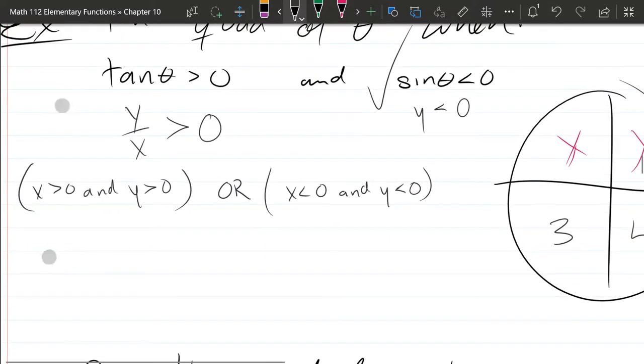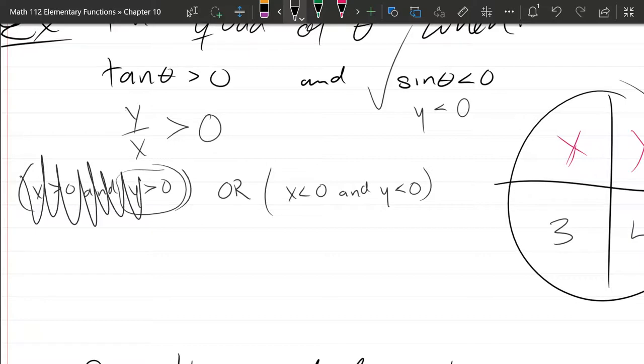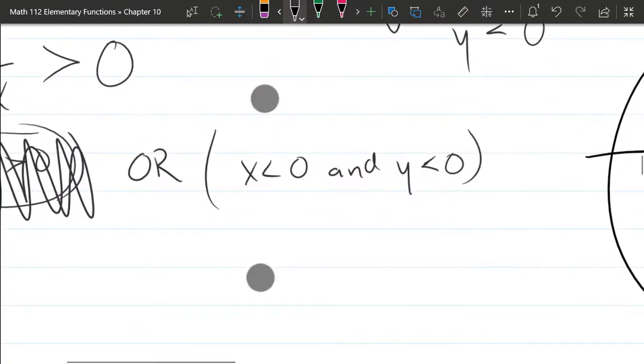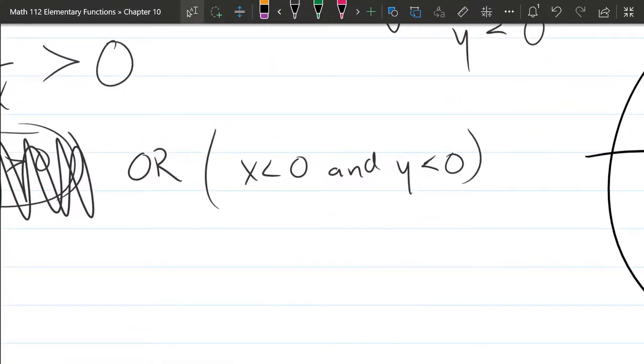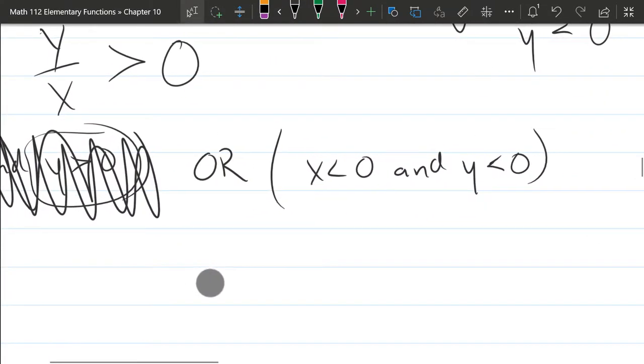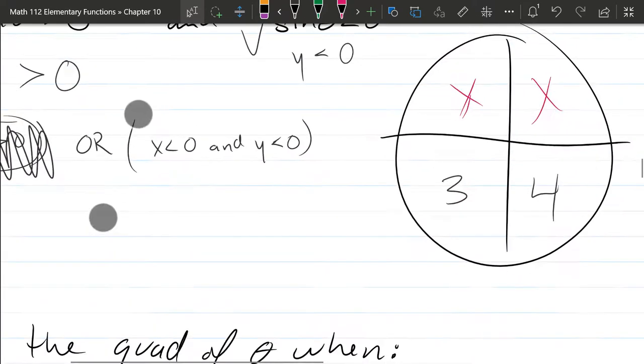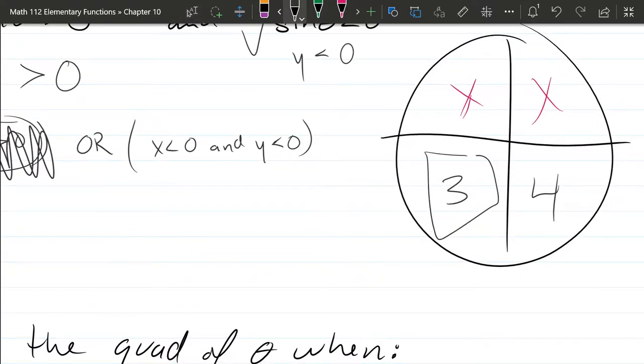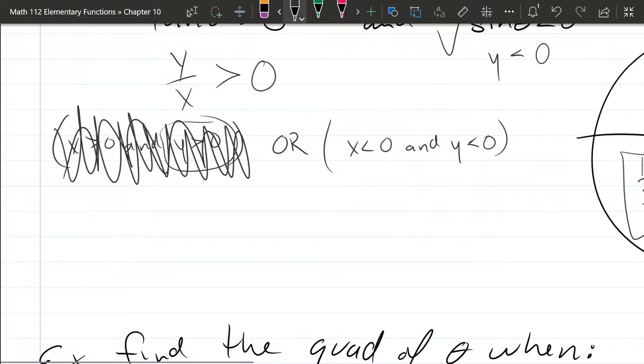So which of these is happening? Well, we already know y is negative. So that means this y greater than zero is not happening. So I'm going to go ahead, cross this out. This is not occurring. So there's one possibility. x is greater than zero and x is less than zero and y is less than zero. Where does that happen? Of course, that happens in quadrant three. So the answer is quadrant three.